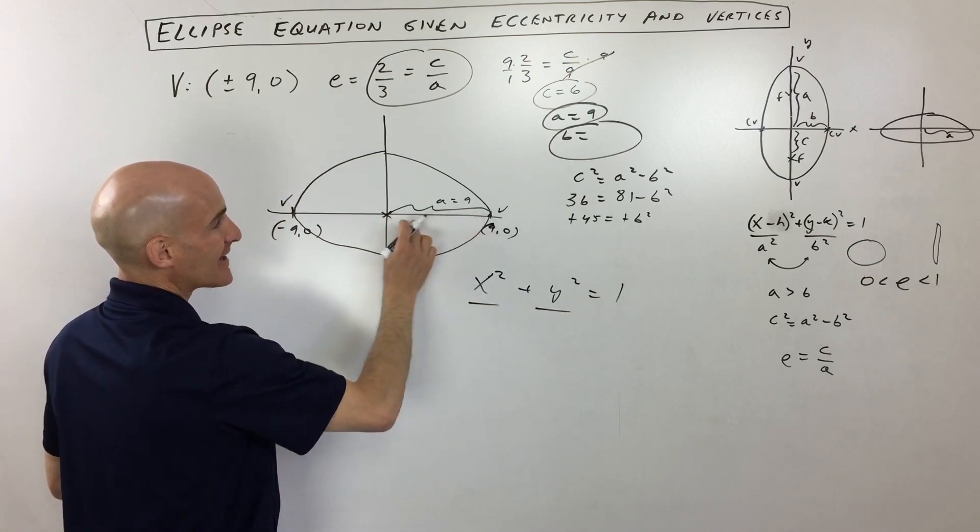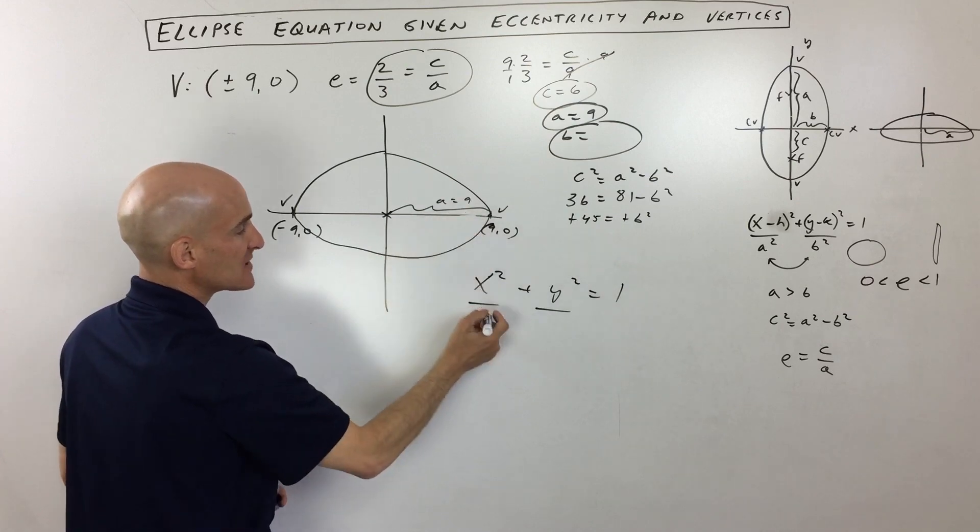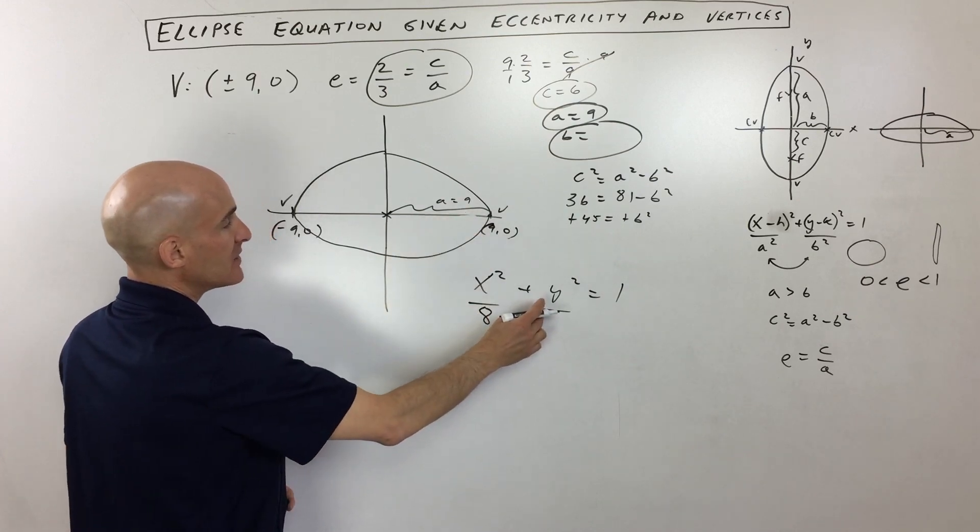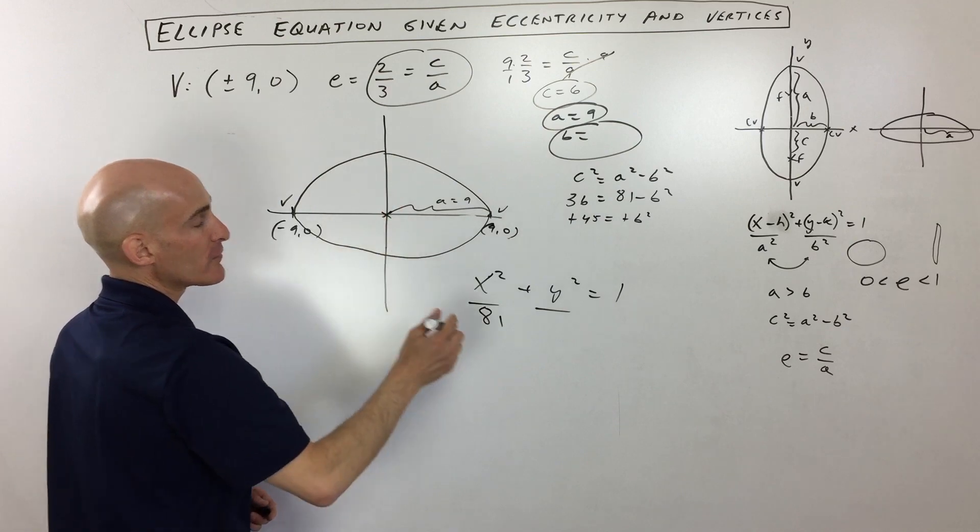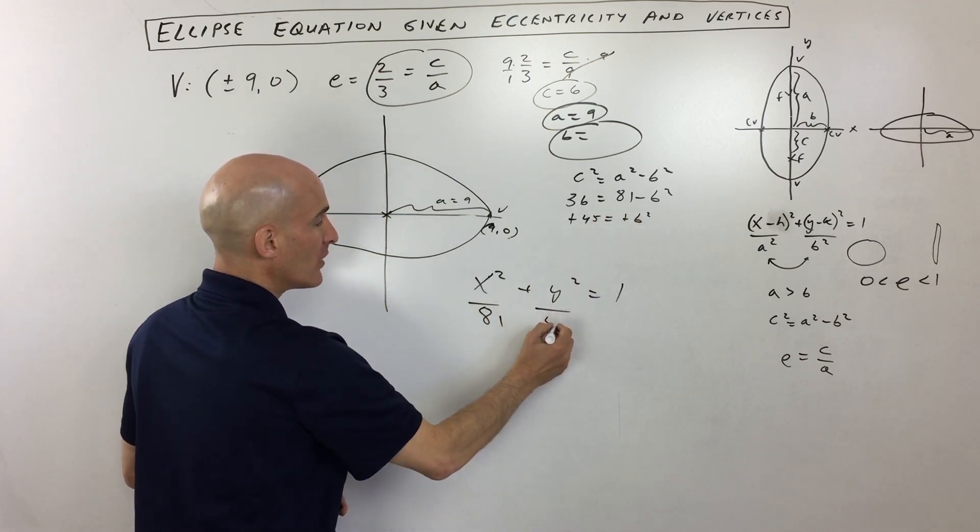And you can see we're going nine to get to the vertices in the x direction, so that's going to be nine squared is 81. And then in the y direction, we're going the square root of 45—this is our b squared value—and that's going to be 45.